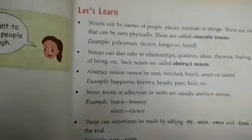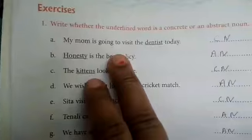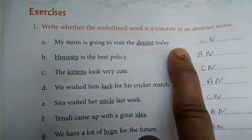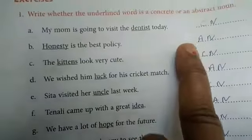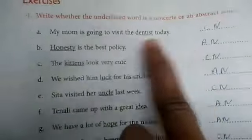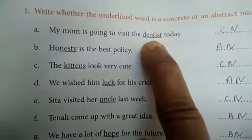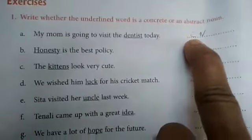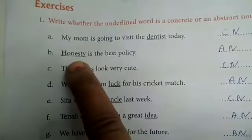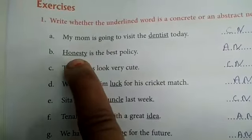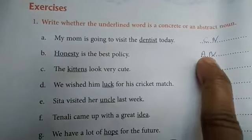This we have already done the day before yesterday also. We have already done this for four days. We have seen this from the beginning. For example, dentist — we can touch the concrete noun. Honesty — we cannot touch the truth, so we have written abstract noun.